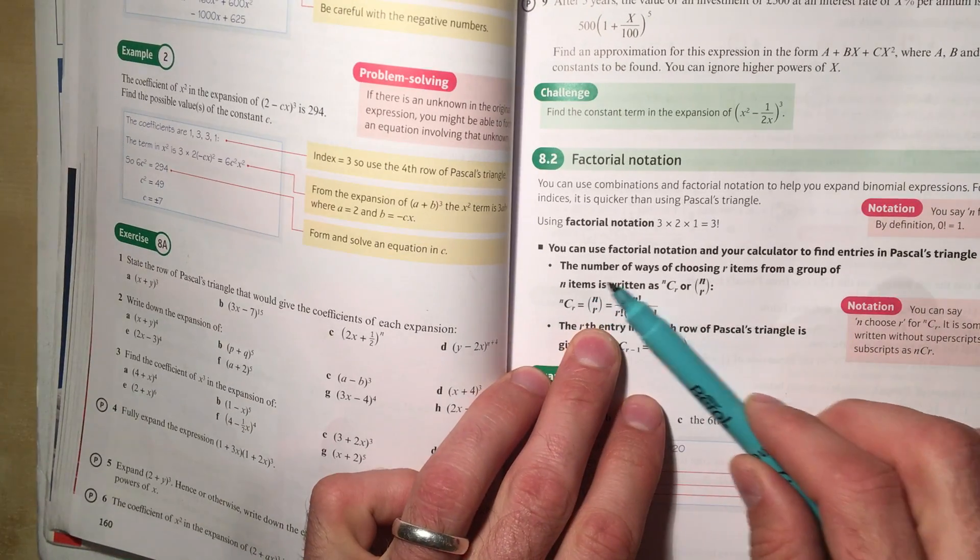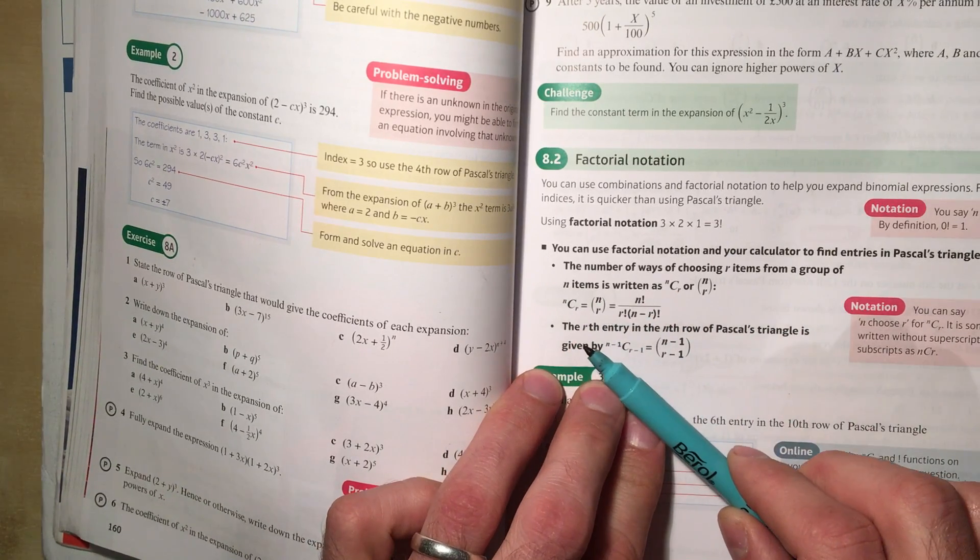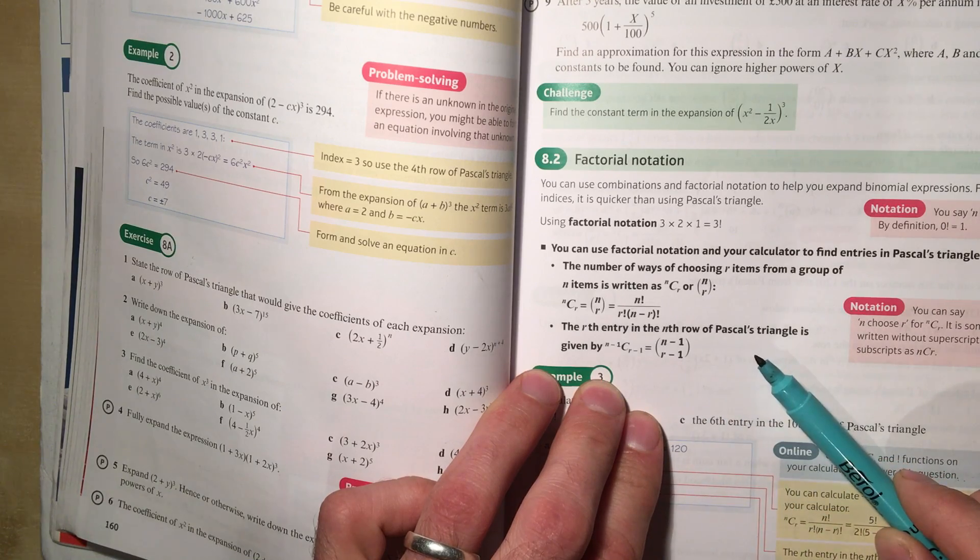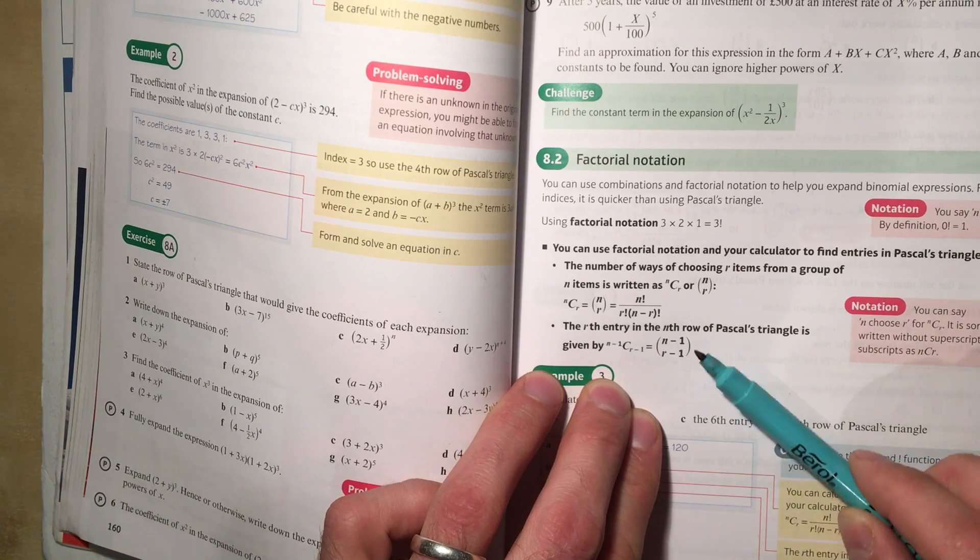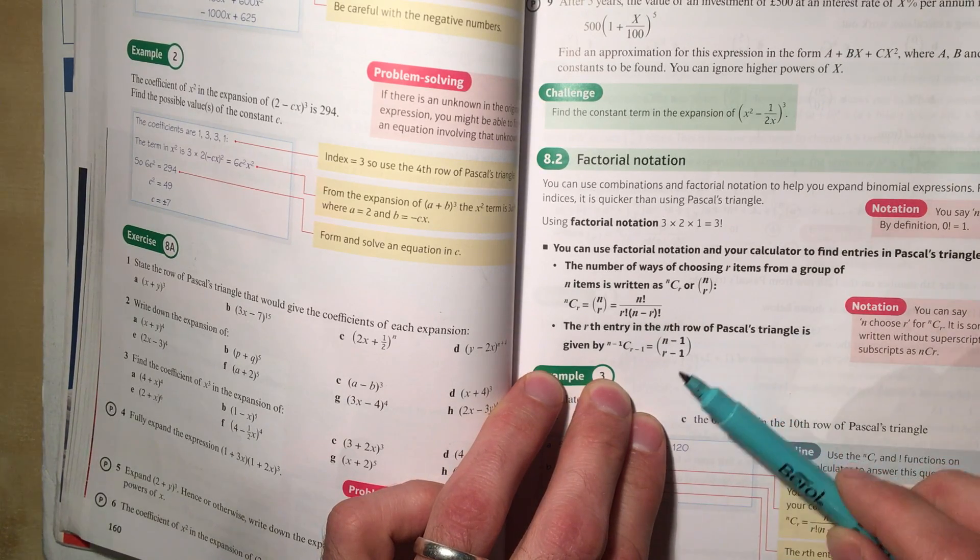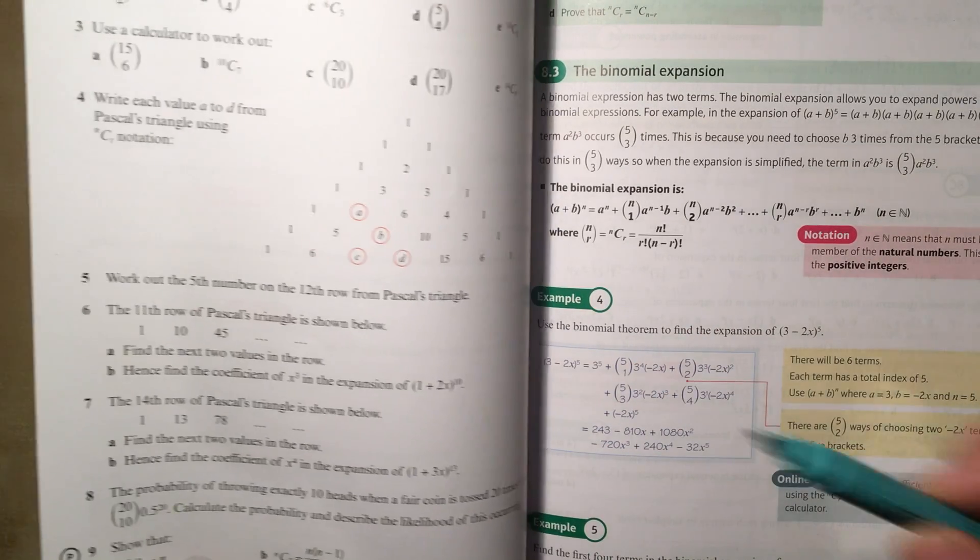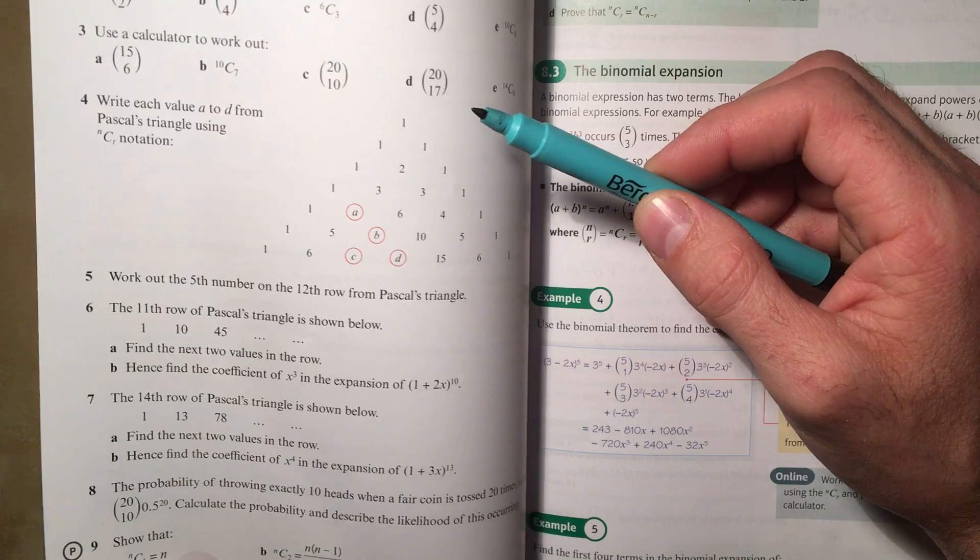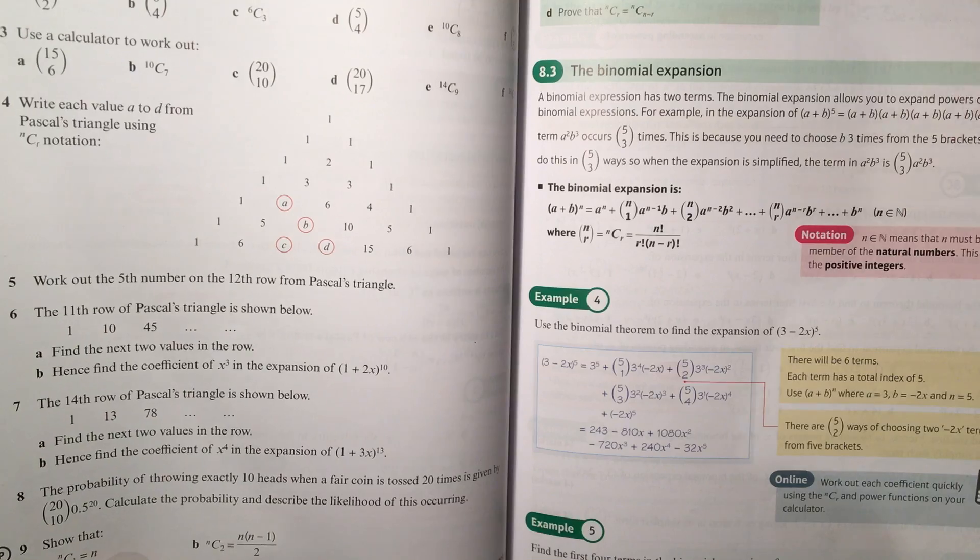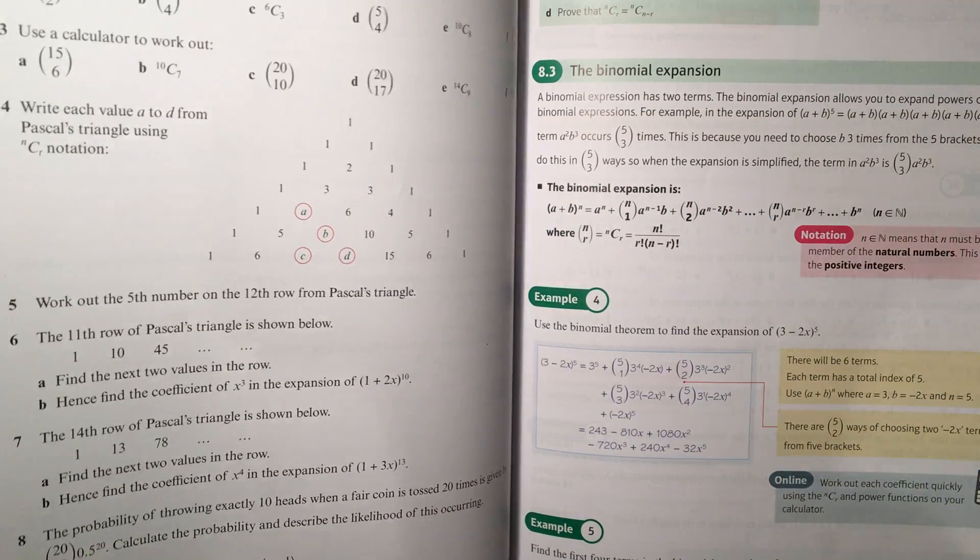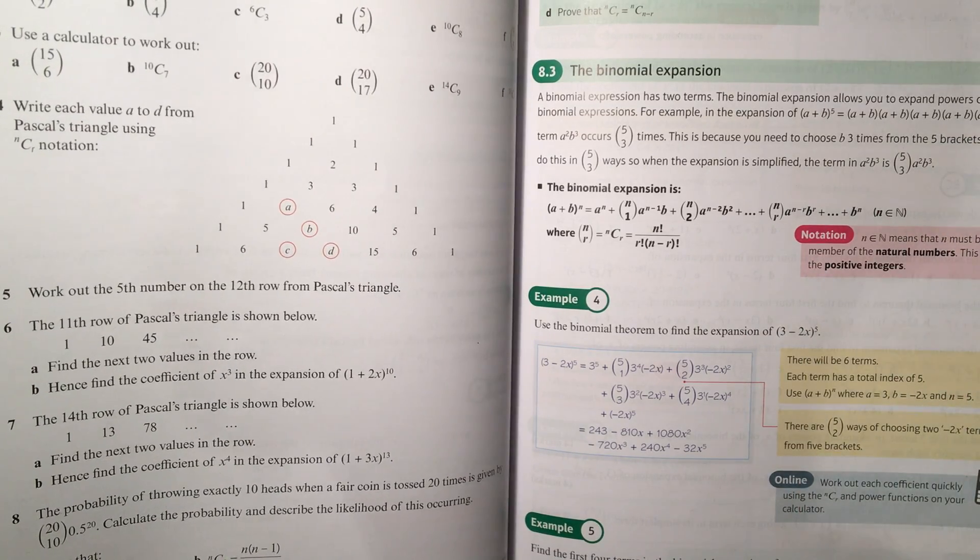So, as it says here, the number of ways of using R items from a group of N items is N choose R. Now, that happens to be the same thing as the rows and columns in Pascal's triangle, but as I said in the first video, I wouldn't worry about the way we're labelling these as N minus R and R minus 1. After this exercise, you're not going to have to worry about the link between 20 choose 17 and Pascal's triangle rows. You know, is it row 19 or row 21? Because I know we have to take one off or add one on or something. The numbers in here aren't quite the same as the rows and columns in Pascal's triangle. We're not going to worry about that.